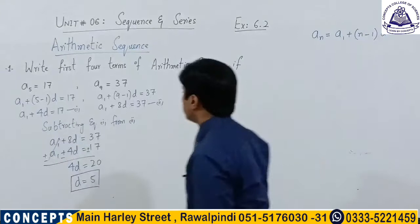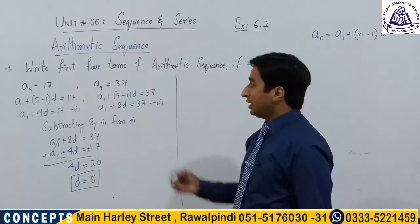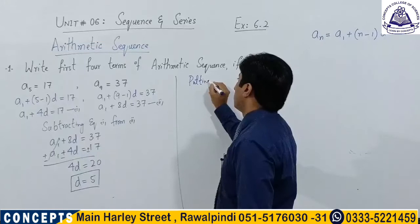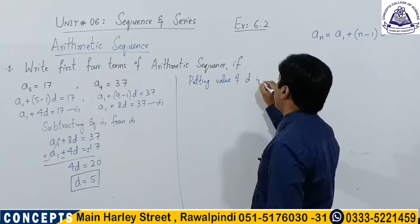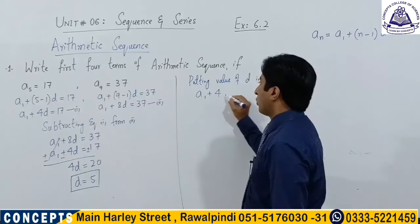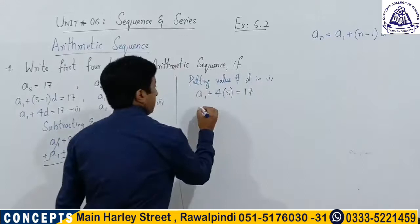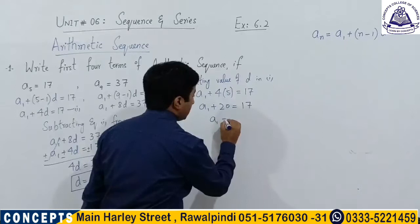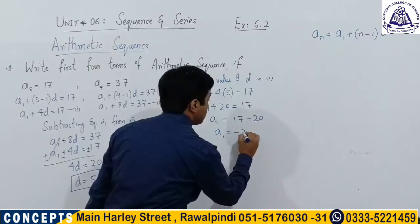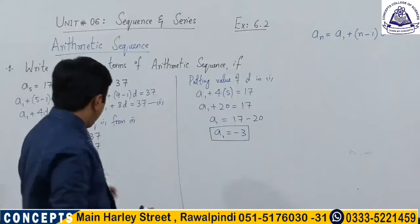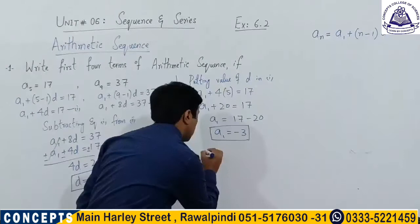To find the value of a1, we replace the value of d in equation number 1: a1 + 4·5 = 17, so a1 + 20 = 17, giving a1 = 17 − 20 = −3. Now we have our first term and the common difference of the sequence, so we can find all other terms.